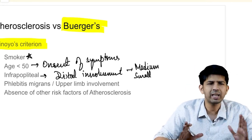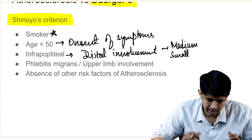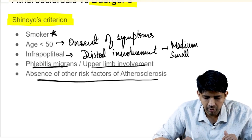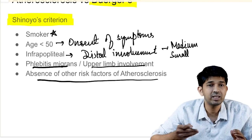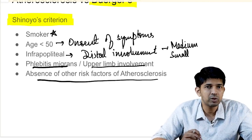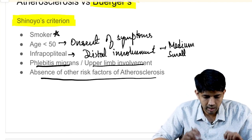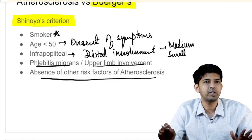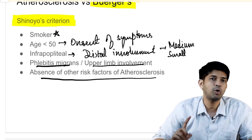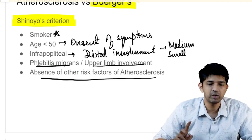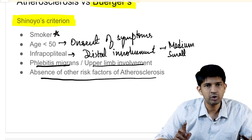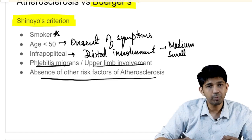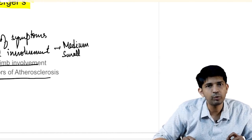In Buerger's disease, you can also have phlebitis migrans or upper limb involvement. The last criterion is the absence of other risk factors of atherosclerosis, such as dyslipidemia and hypertension — if those risk factors are present, it is more likely atherosclerosis. So under Shinoyer's criteria there are five points, all of which must be satisfied: the patient is a smoker, onset of symptoms before age 50, infrapopliteal involvement, phlebitis migrans, and no other atherosclerosis risk factors.